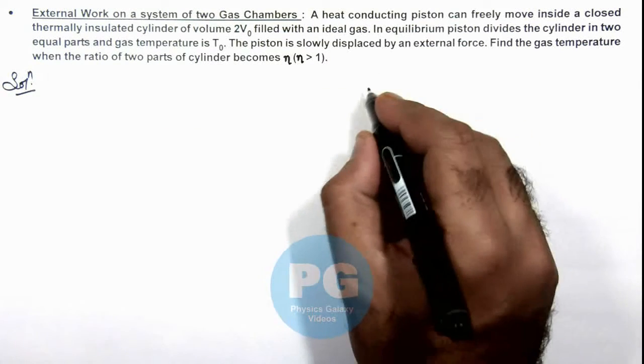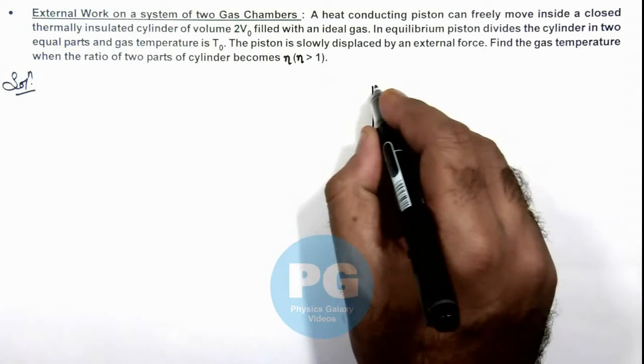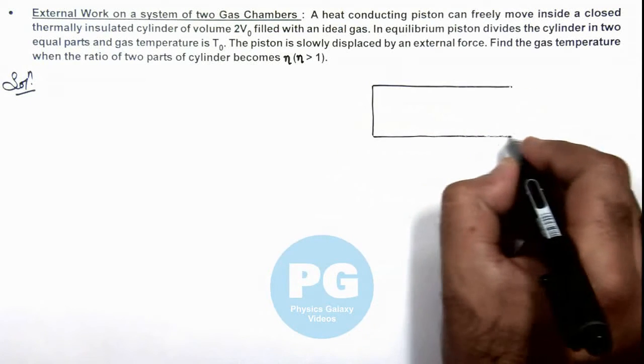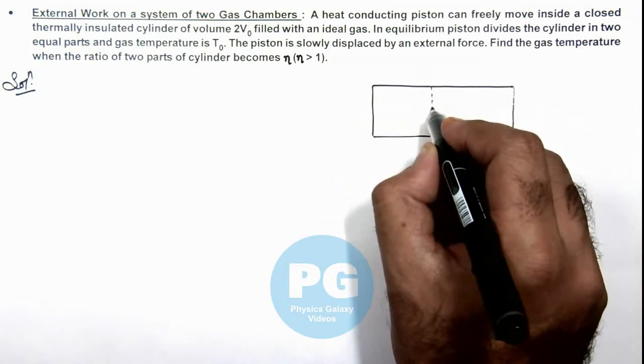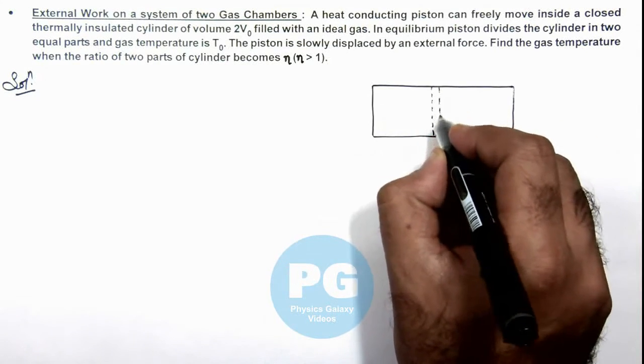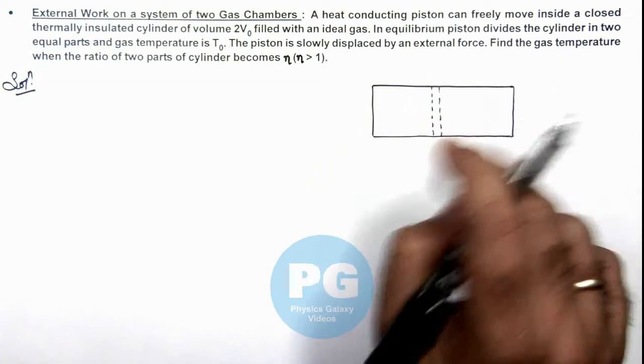To understand it better, we consider a cylinder and draw the diagram. Initially the piston was dividing the two parts of cylinder in equal volumes.